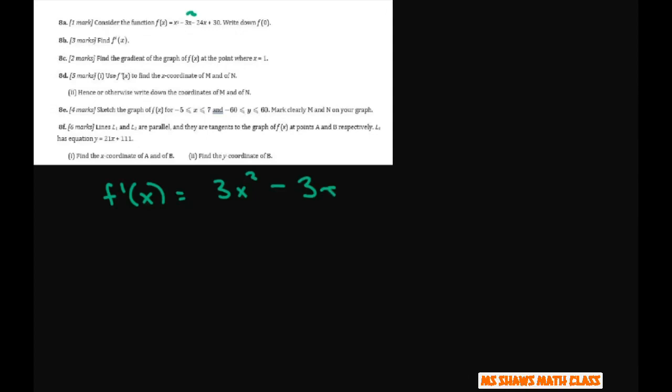Let me write f of x down. Sorry about that. f of x is x cubed minus 3x squared minus 24x plus 30. It wouldn't make sense for them to write it like that. So now when you take the derivative, you multiply this, that's going to be 6x minus 24.